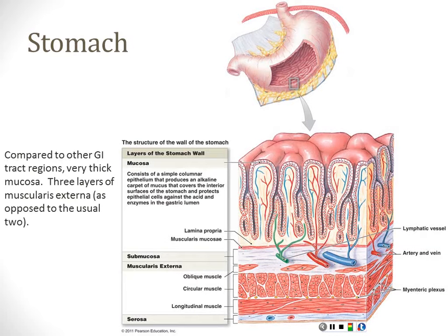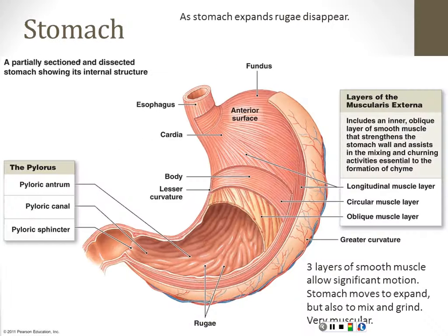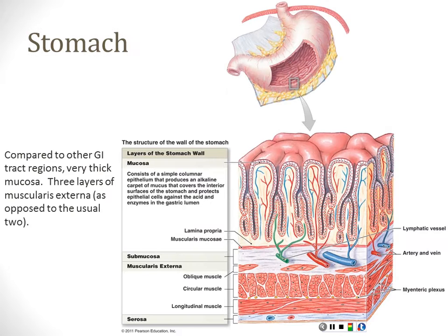We ended last time talking about the stomach — we looked at the gross anatomy, which is just the anatomy you can see with your eyes, both inside and out. Today we're going to zoom down and look at the specialized mucosa that we have in the stomach.